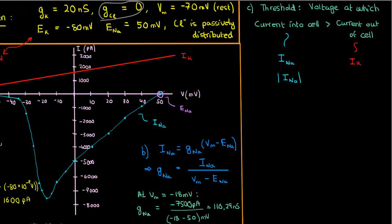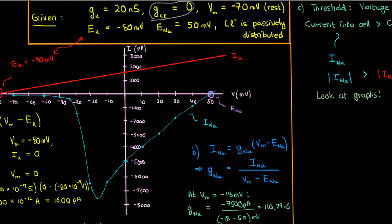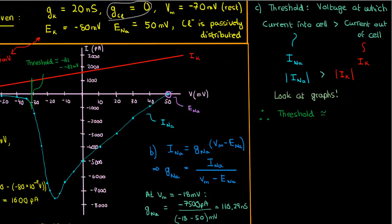For threshold, the magnitude of the sodium current must be greater than the magnitude of the potassium current. The absolute values are there to remove the negative signs, since sodium current flows into the cell. Given that we've already made the IV curves in Part A, this part is straightforward — just compare the currents on the graph. The point where the graphs are the same vertical distance from the horizontal axis occurs at around negative 31 to negative 32 millivolts, and that is the threshold.